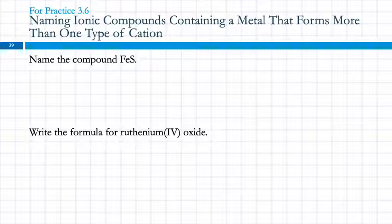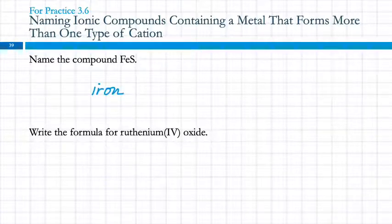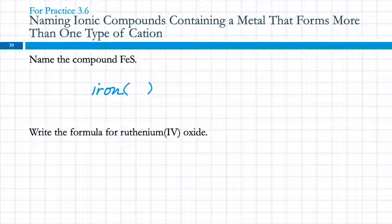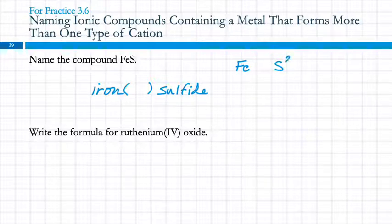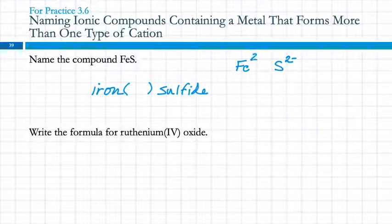Name FeS. The first element is iron. Is iron in Groups 1A, 2A, 3A, zinc, or silver? No — so we need Roman numerals. S is sulfur, which becomes sulfide. There is one iron ion for every one sulfide ion; the sulfide charge is 2−. For the compound to be neutral, the iron must be 2+. So this is iron(II) sulfide.